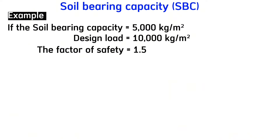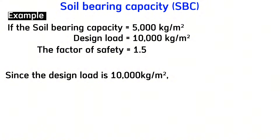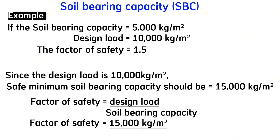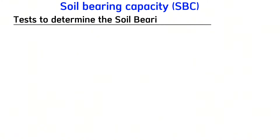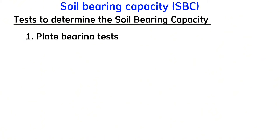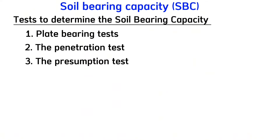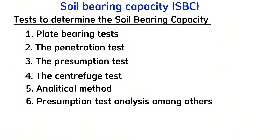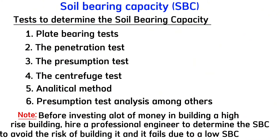The factor of safety is 1.5. Therefore, since the design load is 10,000 kilograms per meter squared, the safe soil bearing capacity should be 15,000 kilograms per meter squared — because 15,000 divided by 10,000 gives 1.5, which is the factor of safety. Tests to determine bearing capacity include the plate bearing test, penetration tests, presumption analysis, centrifuge tests, and analytical methods. Therefore, before investing a lot of money in a high-rise structure, hire a professional engineer to determine the bearing capacity of the soil before building, to avoid the risk of the building failing due to low soil bearing capacity.